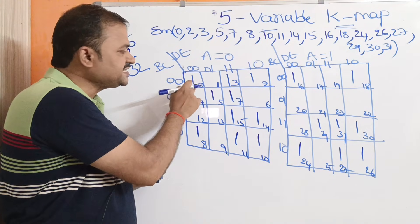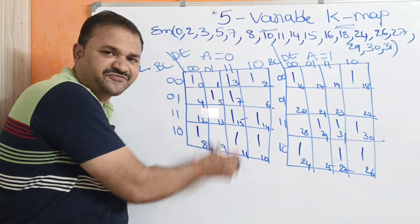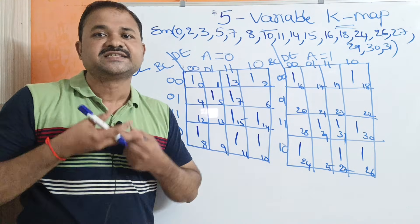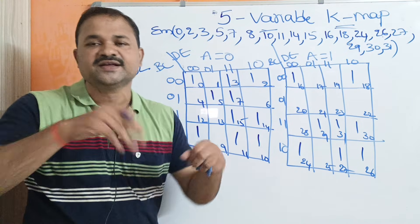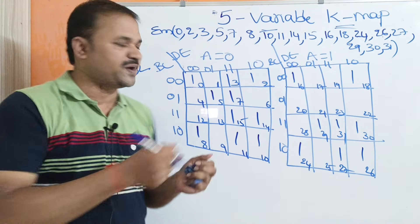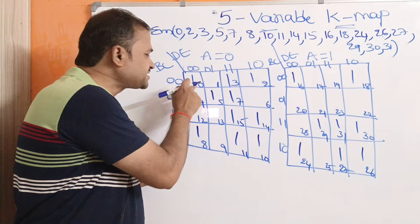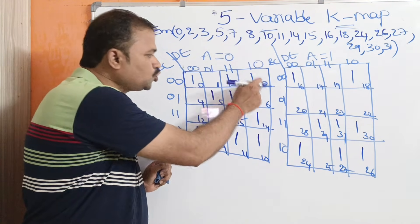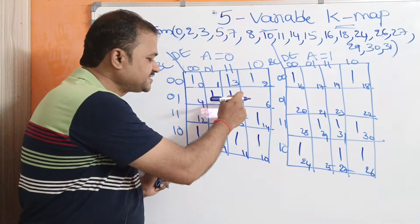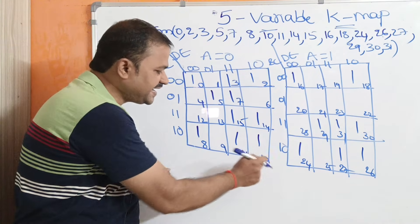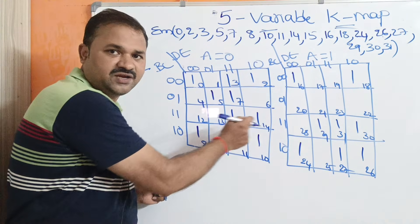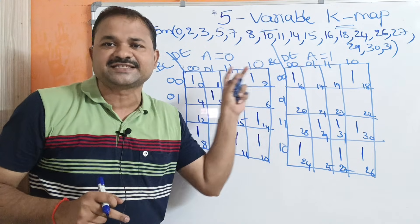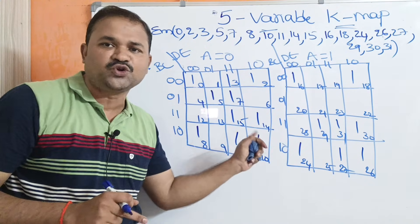The first 4-variable Karnaugh map stores 16 minterms from 0 to 15, just like a standard 4-variable Karnaugh map. So the cells represent minterms 0 through 15 sequentially. The first Karnaugh map totally contains 16 minterms from 0 to 15.